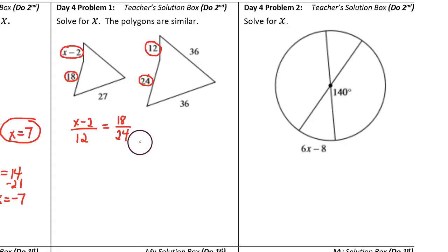Now we can solve with cross multiplication. 24 times the x minus 2 is equal to 12 times the 18. We're multiplying those together diagonally, and we're multiplying these together diagonally.